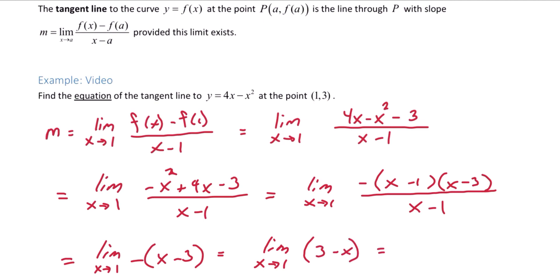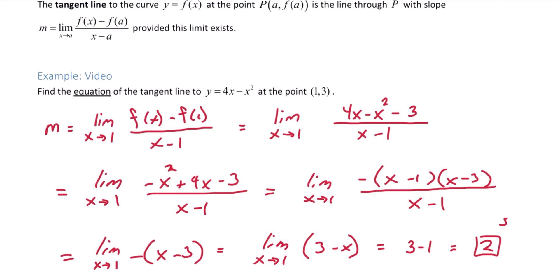From here we can substitute 3 minus 1 is 2. This is the slope of the tangent line at 1, 3. This is the slope of the tangent.